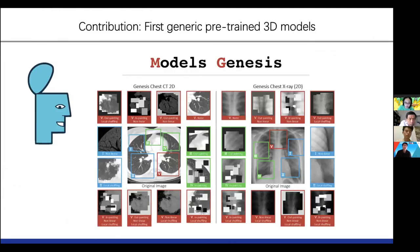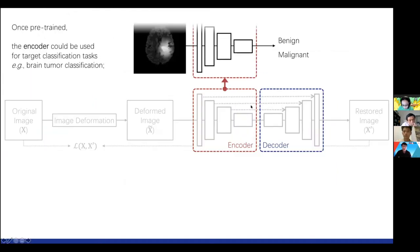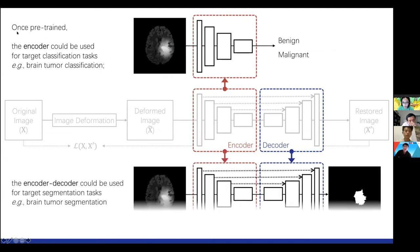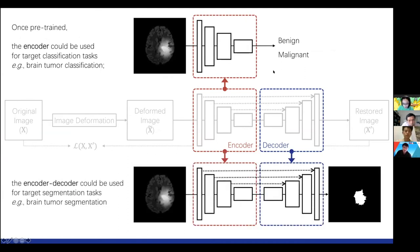Our biggest contribution is that for the very first time, we developed a generic pre-trained 3D model — we call it Models Genesis. When you use Models Genesis, the encoder can be used for classification tasks. For example, given an image, you put it into the encoder and tell whether a lesion is benign or malignant. The encoder-decoder together can be used for segmentation tasks — for example, given an image, segment the lesion.